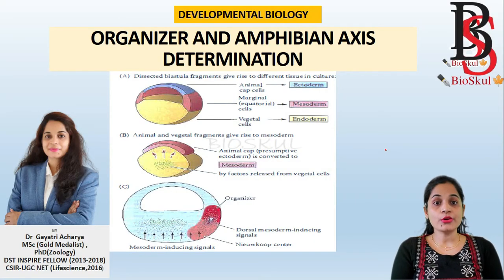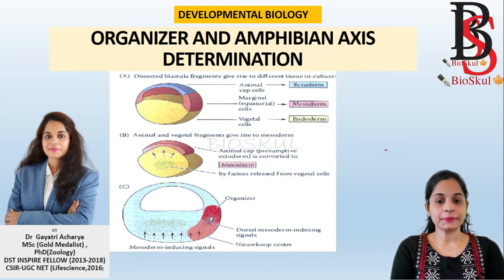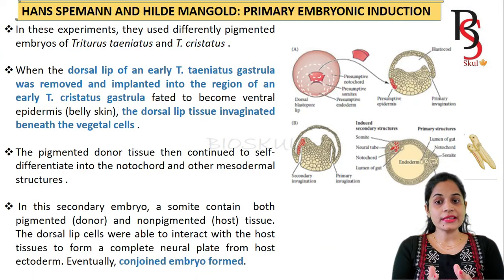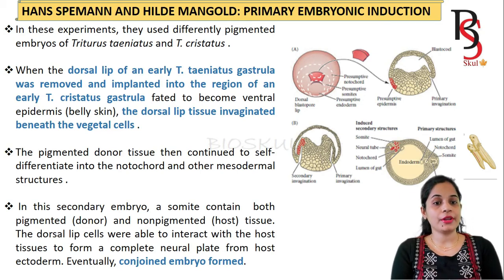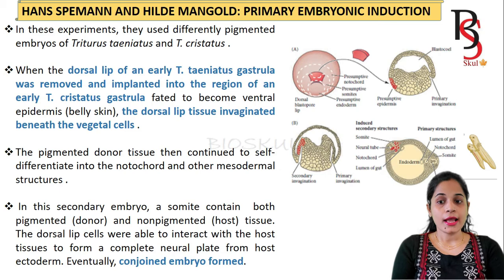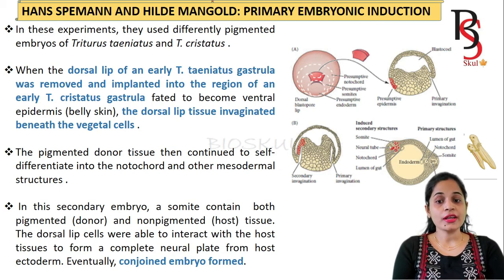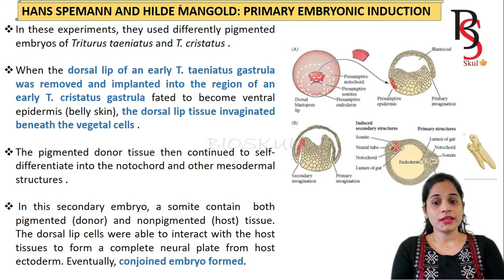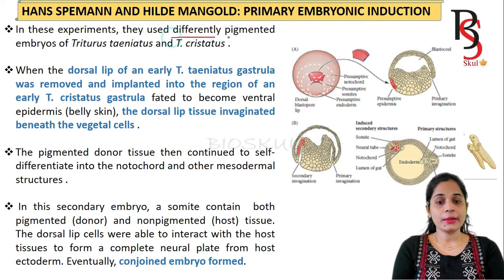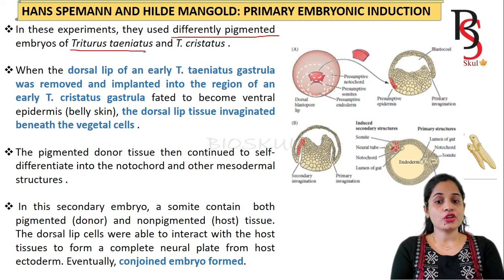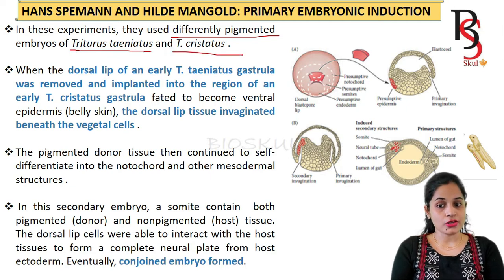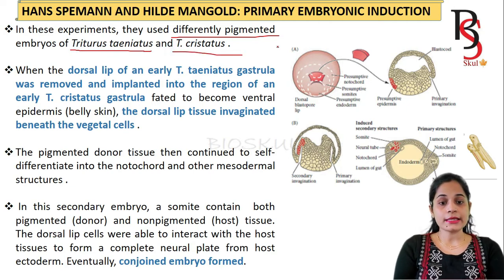Today we will discuss in detail about the organizer and amphibian axis determination. First, we will see the Spemann and Mangold experiment on primary embryonic induction. For this experiment, they chose two differently pigmented embryos of Triturus — Triturus taeniatus and Triturus cristatus.